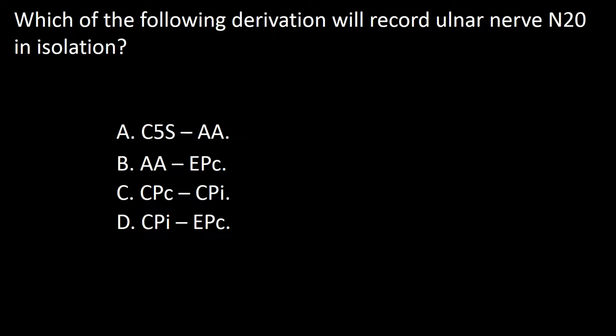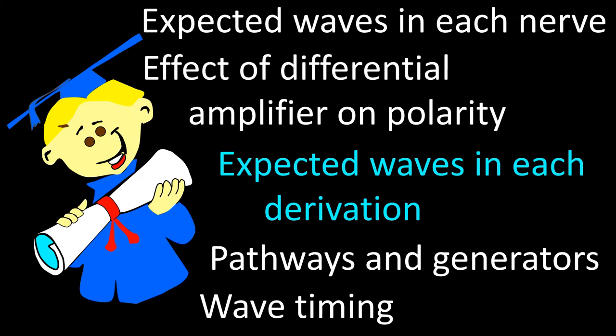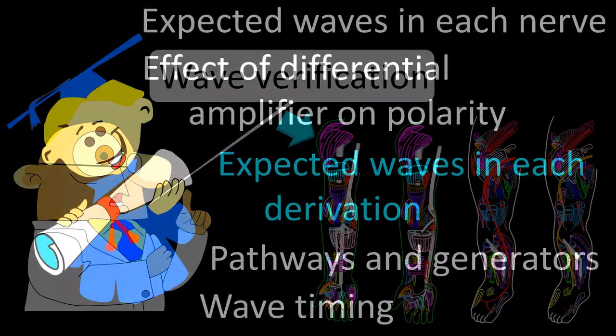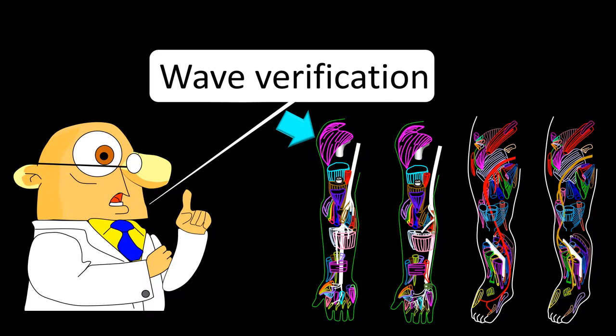Next question: which of the following derivations will record ulnar nerve N20 in isolation? A, C5S to AA; B, AA to EPC; C, CPC to CPI; D, CPI to EPC. The third pillar of wisdom for somatosensory evoked potential wave verification is the knowledge of the expected waves in the tracing from each derivation. Median nerve and ulnar nerve somatosensory evoked potentials are studied using the same montage and derivations, so we will approach them together.